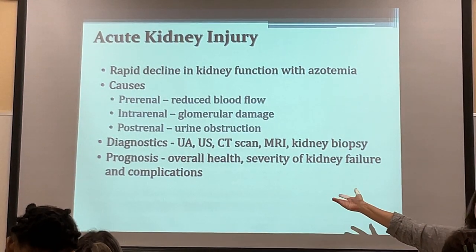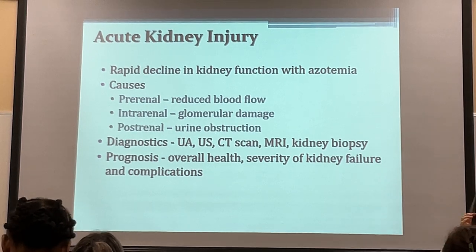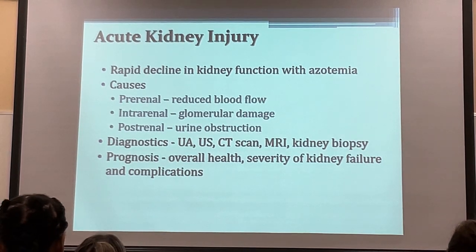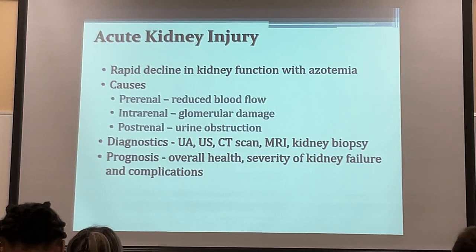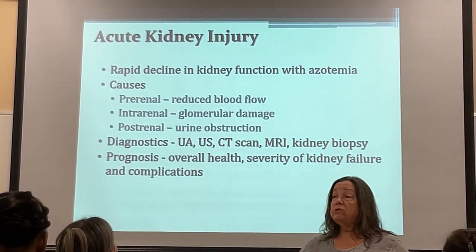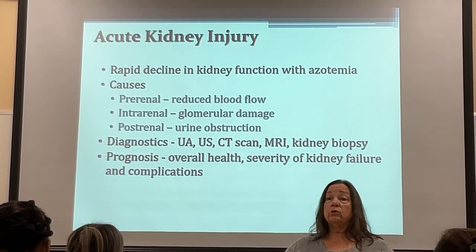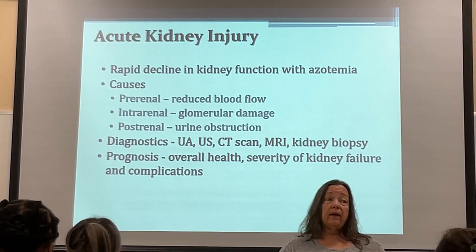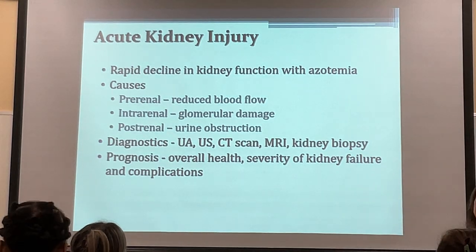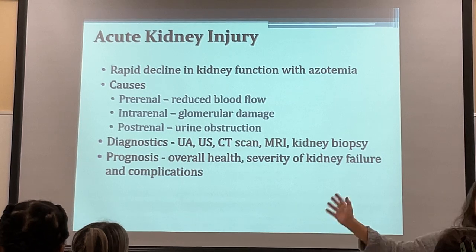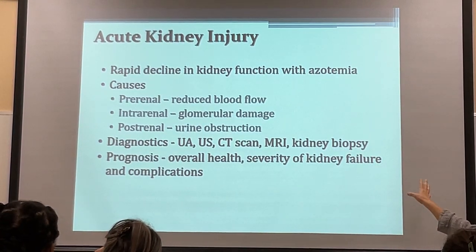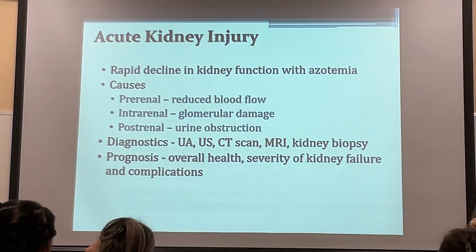Pre-renal is a reduction in blood flow. Intra-renal is anything that attacks the glomerulus directly inside the kidney. Post-renal is any kind of obstruction to urine output — stones, BPH, uterine tumors, GYN tumors, even constipation can obstruct post-renal and could also obstruct a peritoneal dialysis catheter. Diagnostics include UA, ultrasound, MRI, and possibly a kidney biopsy for intra-renal causes.